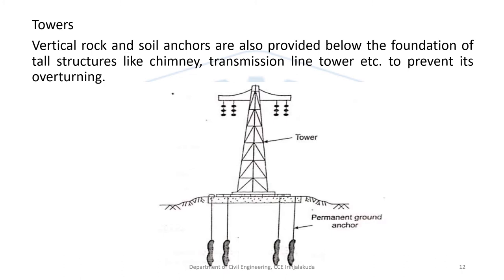Rock and soil anchors are also provided below the foundation of tall structures like transmission line towers to prevent overturning. Overturning may occur because of tensile forces in the power lines. By anchoring the foundation with suitable permanent ground anchors, we can stabilize such structures.